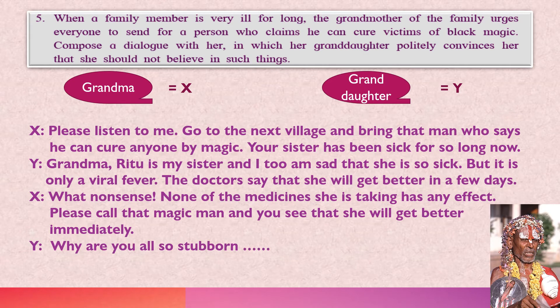The granddaughter replies: 'Why are you so stubborn?' You have to continue with the dialogue to show that the granddaughter is against the grandmother getting a person to do magic to cure her sister.